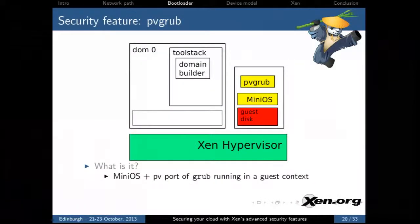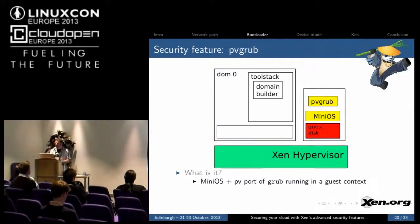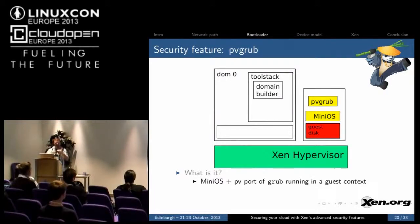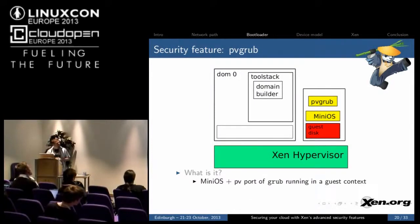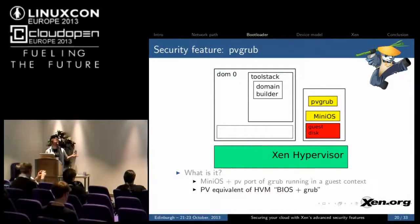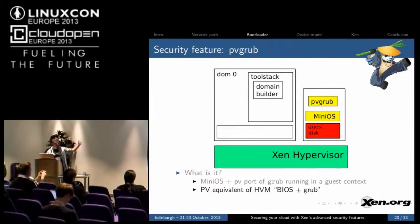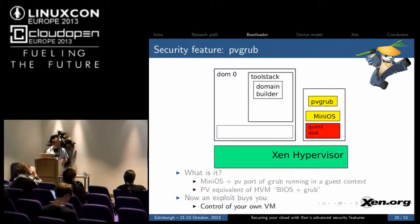PVGrub is mini OS plus a PV port of Grub that runs inside the guest context. Mini OS is a very small operating system that runs only on Xen, doesn't have a user-kernel mode separation, and provides really basic libc functionality — you can only run single-threaded applications. PVGrub is essentially the PV equivalent of the HVM's BIOS plus Grub — you're reading the guest disk, executing the menu, and then loading the kernel in the PV context. Now an exploit buys you control of your own VM.